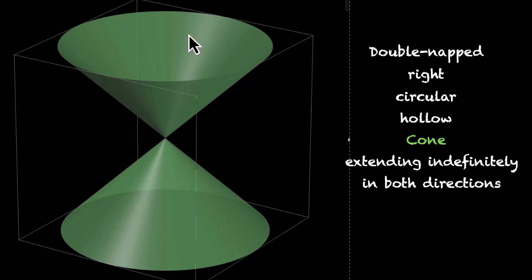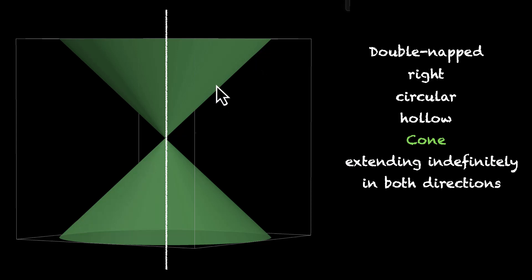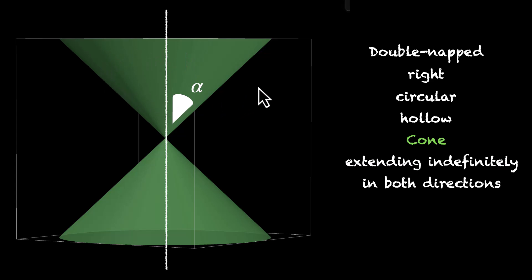How do we make this cone? We take a fixed point, we have an axis, and we take another line called the generator. This line is called the generator. We tilt it — let this angle be alpha. So, this generator is at an angle alpha with this line, and then we rotate it in 3D. When this line rotates, the surface that we get is called this cone — a double-napped right circular hollow cone. Because the generator also extends indefinitely, this cone extends indefinitely in both directions.